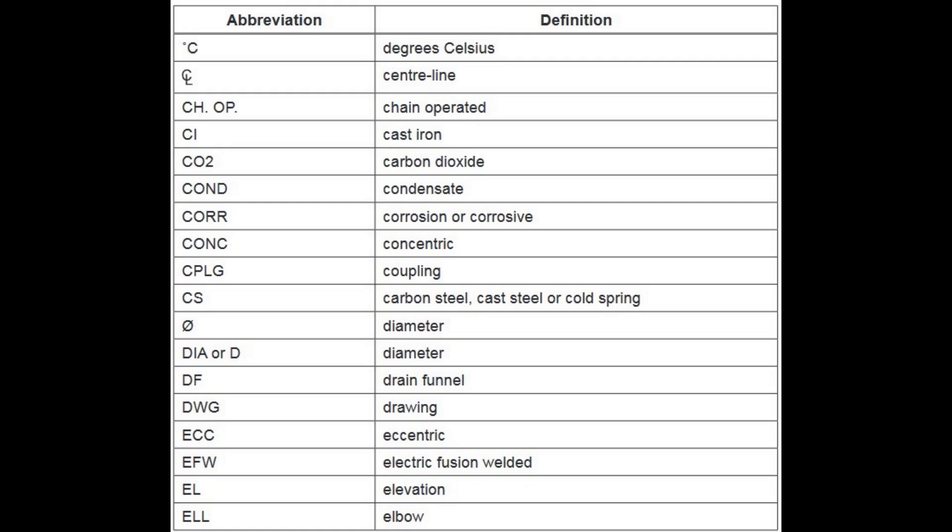Degree Centigrade stands for Degree Celsius. CL stands for Centerline. CHOP stands for Chain Operated. CI stands for Cast Iron. CO2 stands for Carbon Dioxide. COND stands for Condensate. CORR stands for Corrosion or Corrosive. CONC stands for Concentric. CPLG stands for Coupling. CS stands for Carbon Steel, Cast Steel, or Cold Spring.